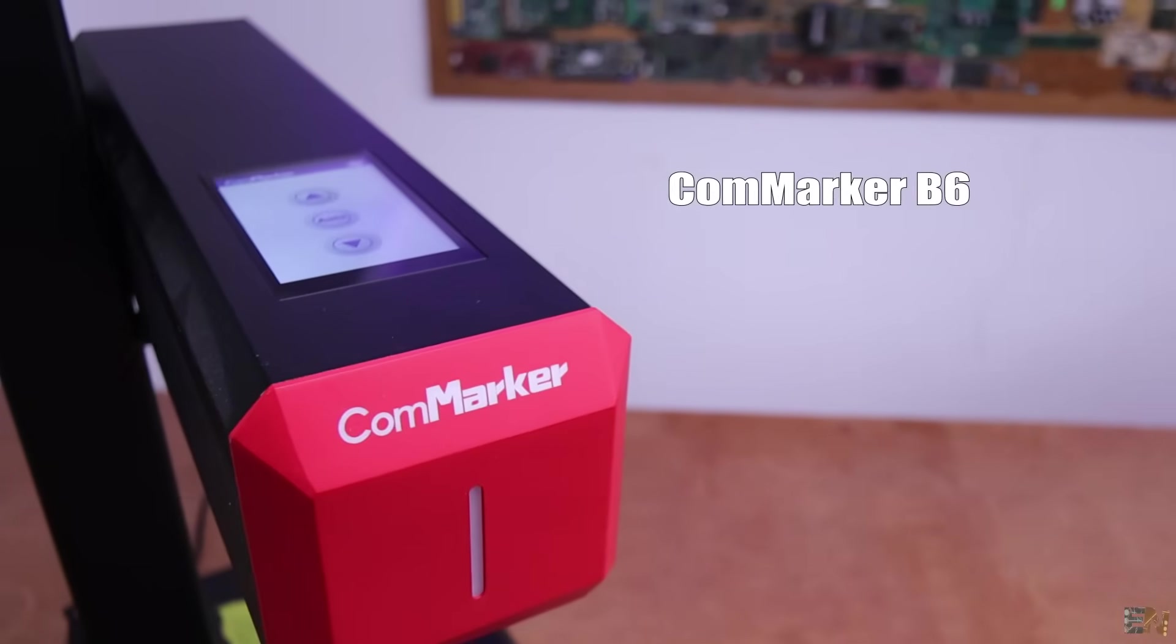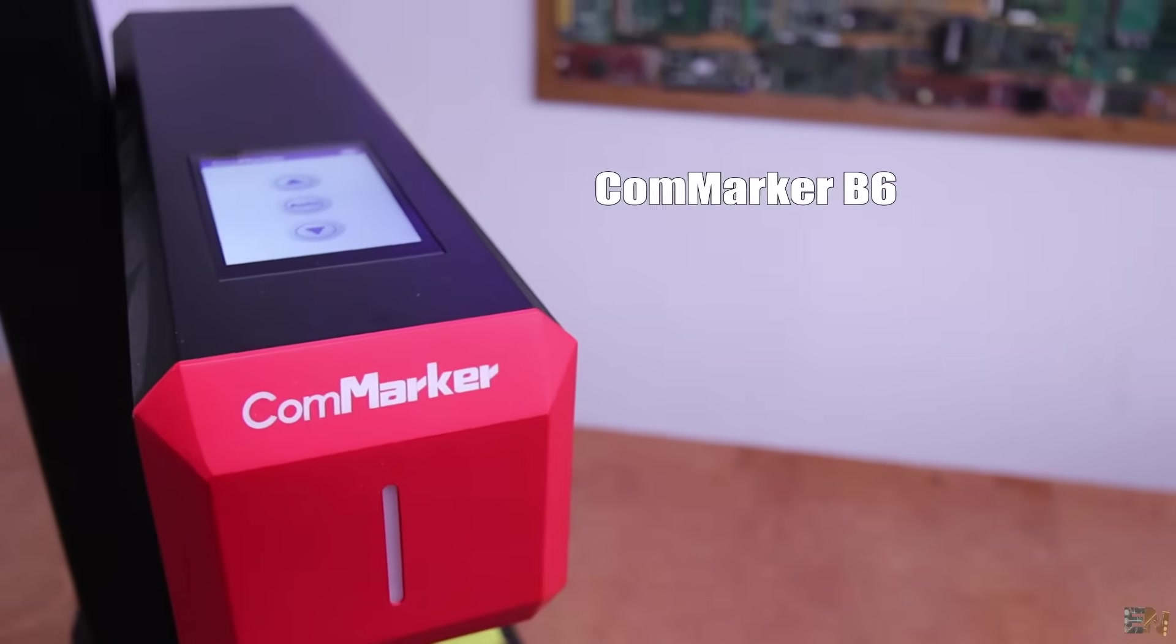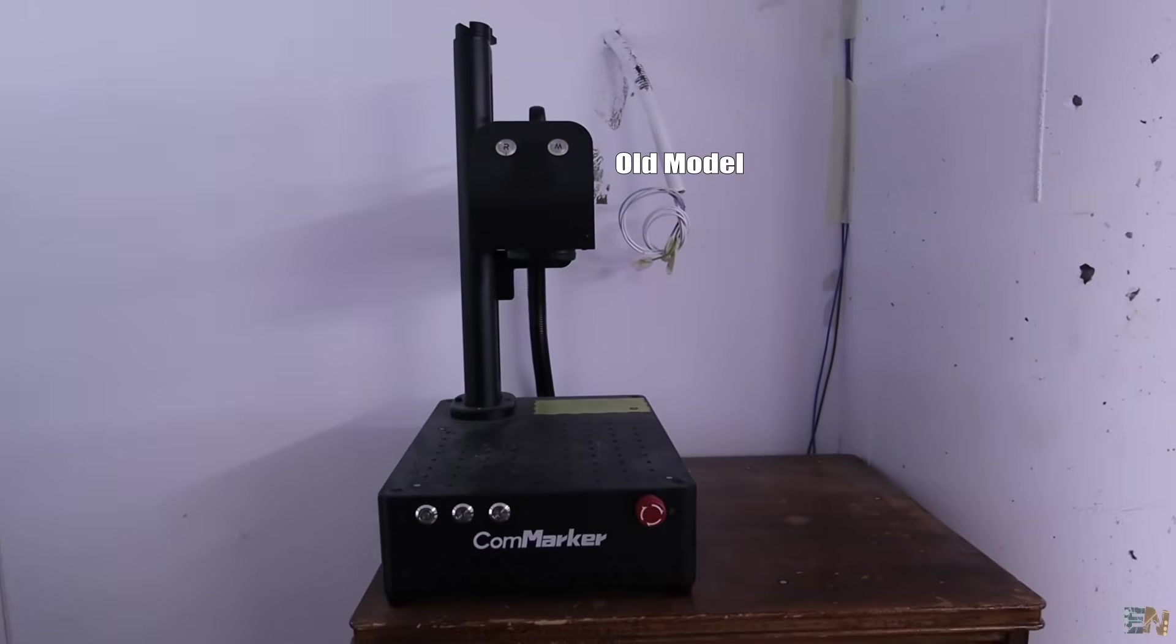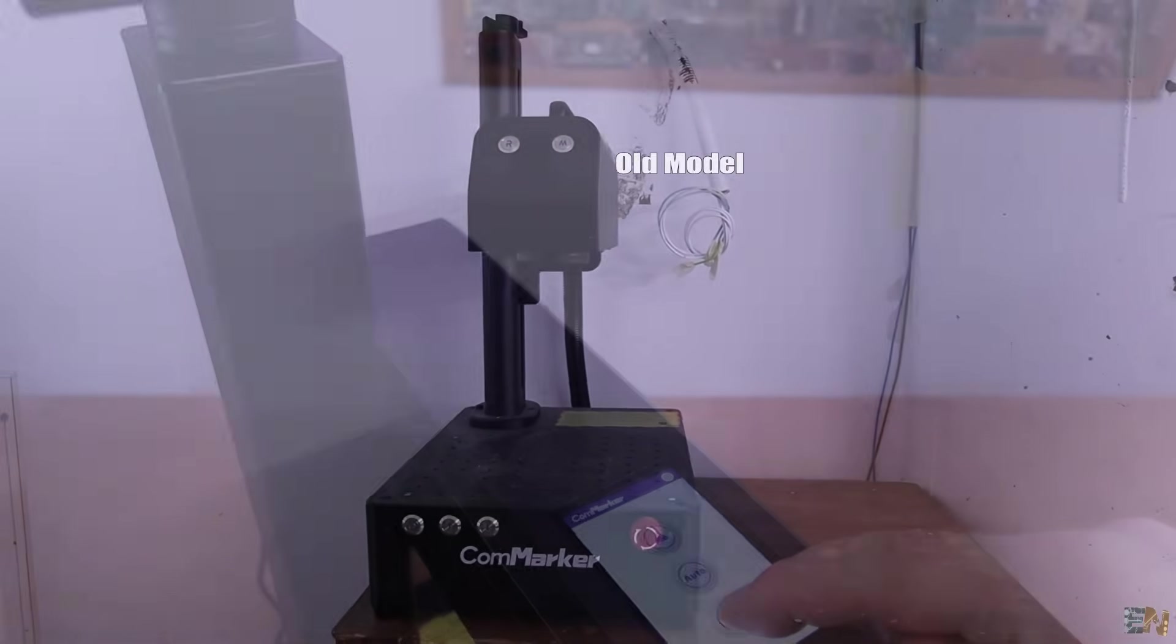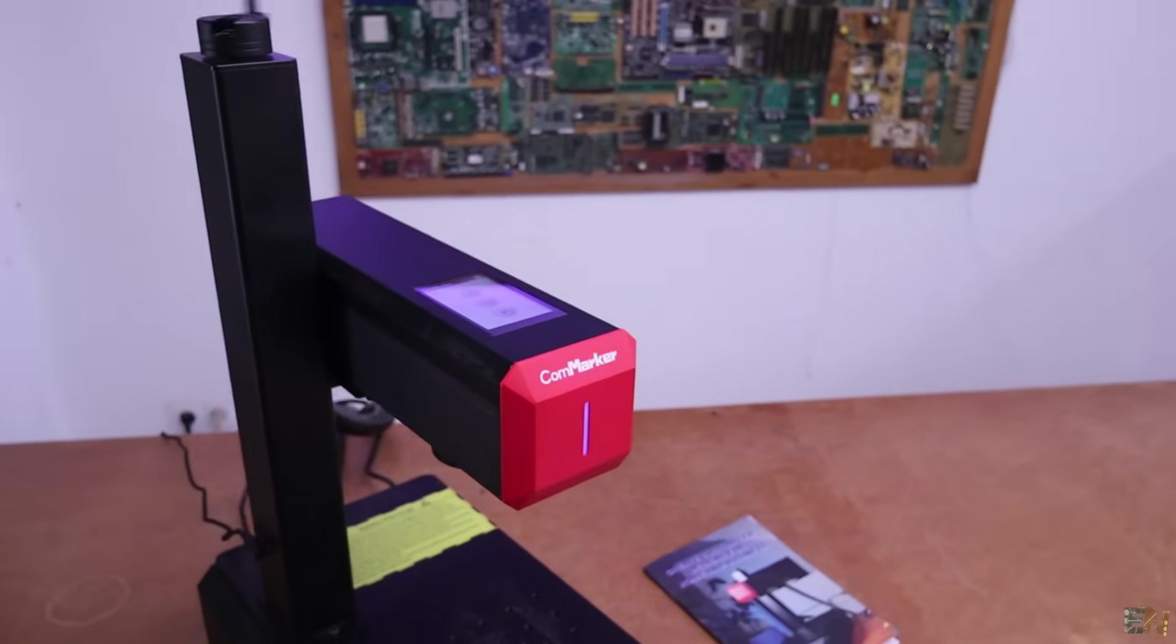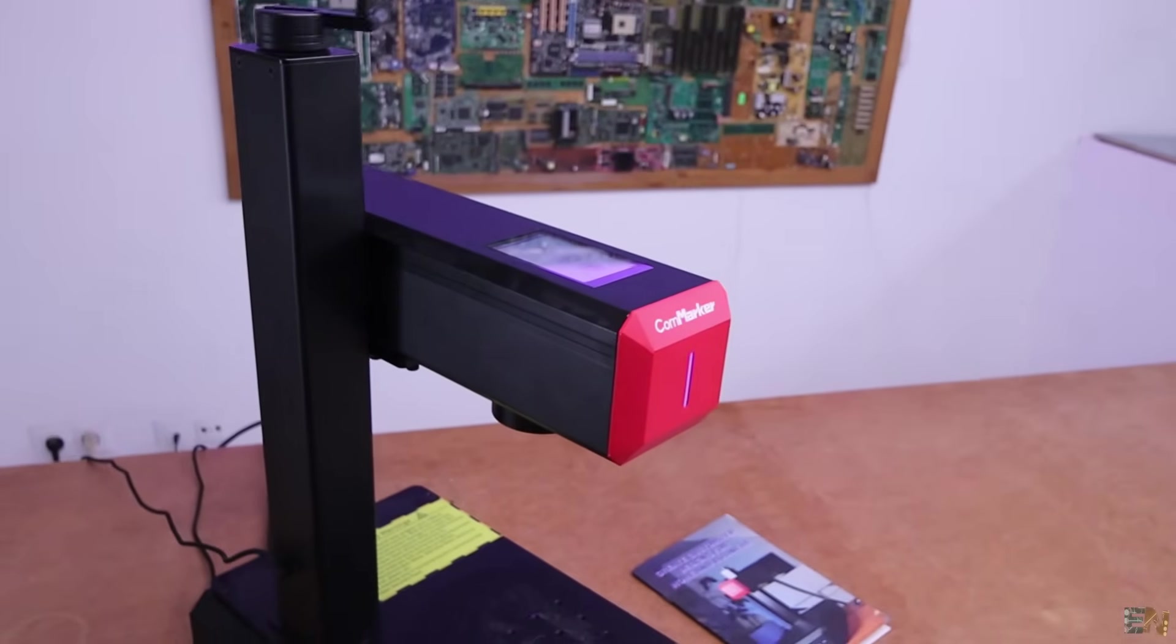Well, today I'll be using this CamMaker B6 fiber laser engraver. It has some cool features compared with the previous model that I had, the B4. Now we even have auto level, so just with one click on this touch screen, the laser and the detector below will detect the distance and focus the laser.